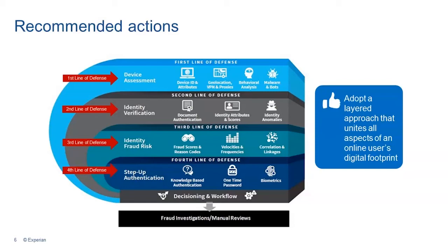A potential friction you could introduce is step-up authentication — this is when you bring in something that they know. Things like: what type of mortgage payment does the potential business owner have, or what's their last address? Many of you have answered these types of questions during the account opening process. This is an opportunity to incorporate something like Experian's KnowledgeIQ as part of your overall fraud strategy. The idea is to bring in something that they have, something that they are, and something that they know — strung together by a decision layer — to be more effective at identifying third-party fraud.